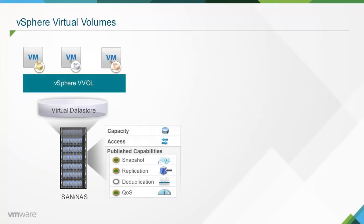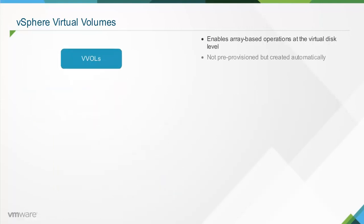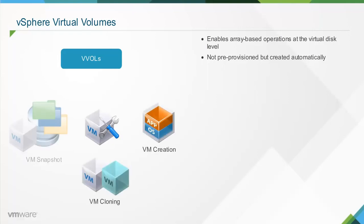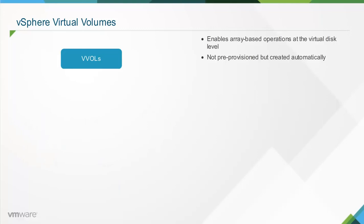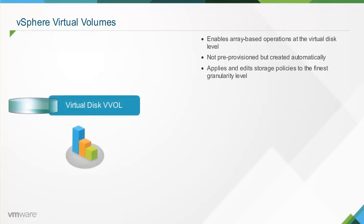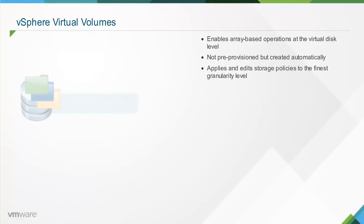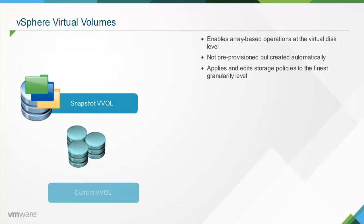Virtual volumes, or VVOLs, is a new virtual machine disk management and integration framework that exposes virtual disks as the primary unit of data management for storage arrays. This framework enables array-based operations at the virtual disk level that can be precisely aligned to application boundaries. Virtual volumes are not pre-provisioned but are created automatically when virtual machine management operations such as virtual machine creation, cloning, and snapshotting are performed. By using different virtual volumes for different virtual machine components, storage policies can be applied and edited to the finest granularity level — for example, a virtual volume containing a virtual disk can have a broader set of data services and performance levels than the virtual volume for the virtual machine boot disk, and a snapshot virtual volume can use a different storage tier compared to a current virtual volume.